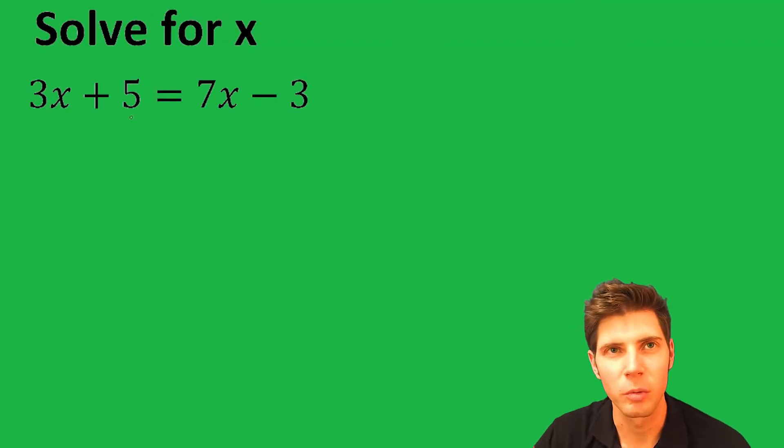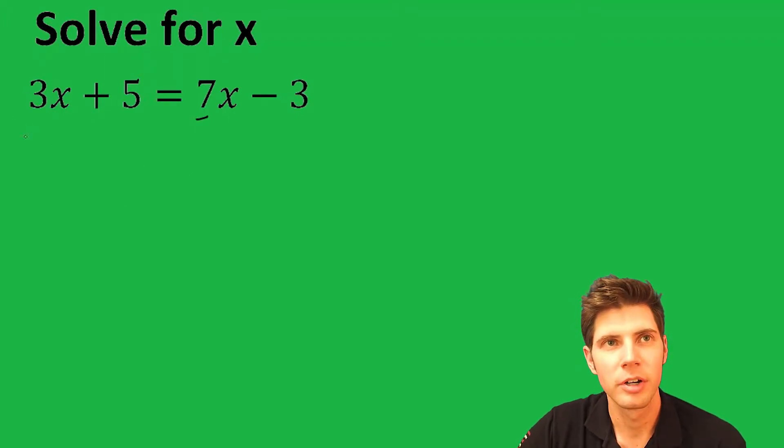The way I like to handle that is look for the one that's larger. Notice in this case the 7x is larger, and you're going to bring the other one over. So we have a 3x here. I'm going to subtract 3x from both sides. Subtract 3x, and I line it up with this 7x here.